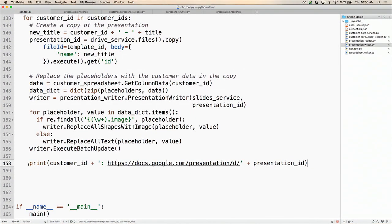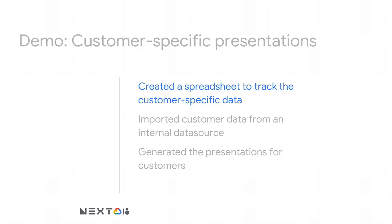This wraps up the demo. Let's do a quick recap of what we covered. We took a template presentation, read all the placeholders out of it, and put that information into a spreadsheet. Next, we queried our internal service to fetch the customer data and pushed it into the spreadsheet — and this could be anything: an internal SQL database or an internal microservice. We tagged the data with developer metadata to make it easier to read later and to ensure user modifications can't affect the structural integrity of the spreadsheet. Finally, we generated presentations by making a copy of the template and replacing the placeholders with the actual data fetched from the spreadsheet.